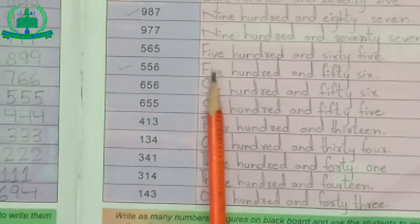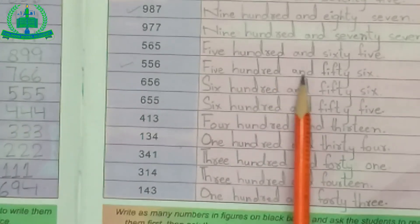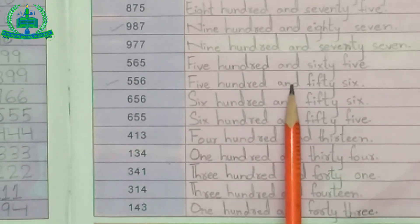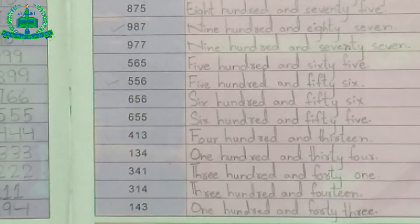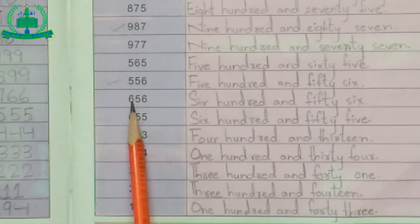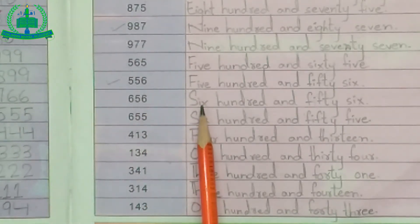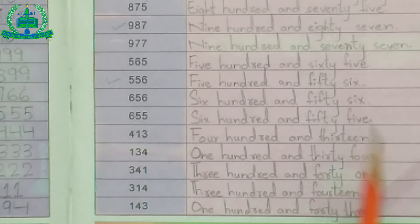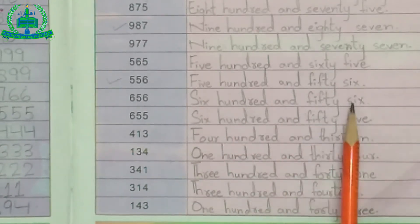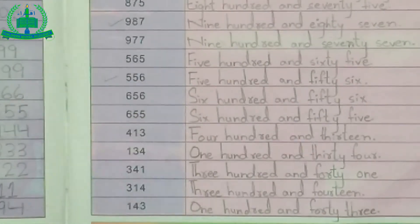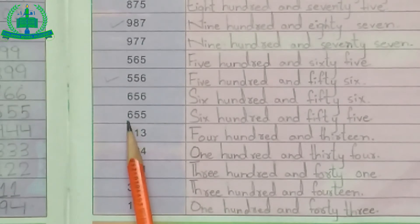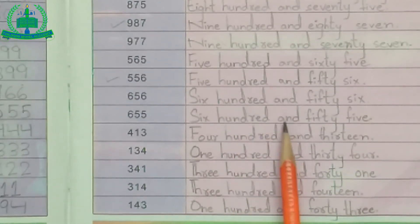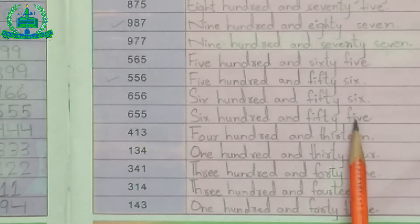556. F-I-V-E, H-U-N-D-R-E-D, A-N-D, F-I-F-T-Y, S-I-X. 556: five hundred and fifty-six. 656: six hundred and fifty-six. 655: six hundred and fifty-five.